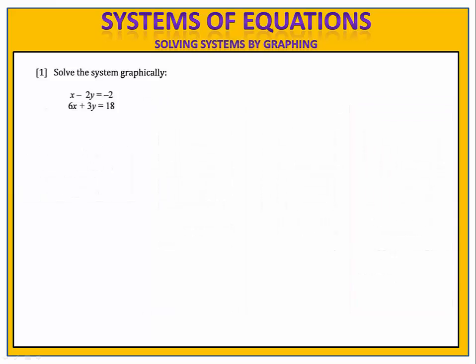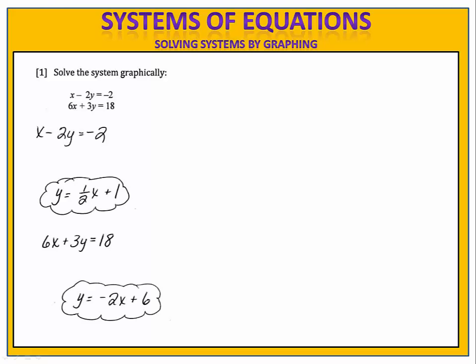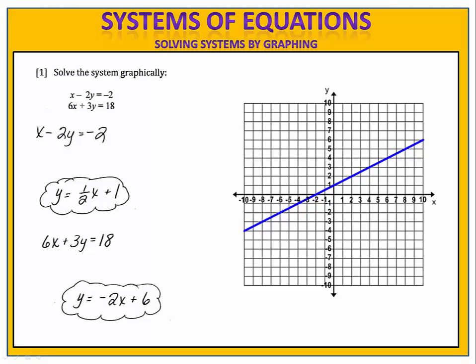In our first exercise, we want to solve the system of equations graphically: x minus 2y equals negative 2 and 6x plus 3y equals 18. The first thing we do is put each of the equations in slope-intercept form, y equals mx plus b. Then we graph each equation on the coordinate plane. Finally, we look for the point of intersection.